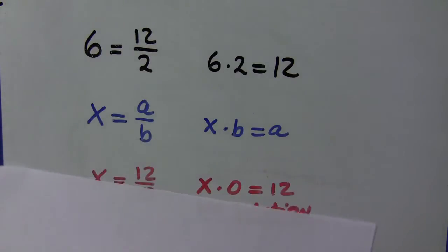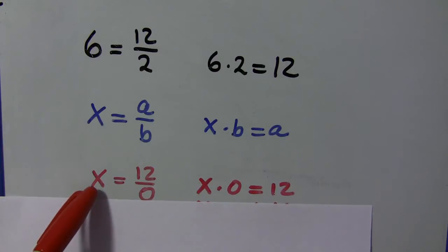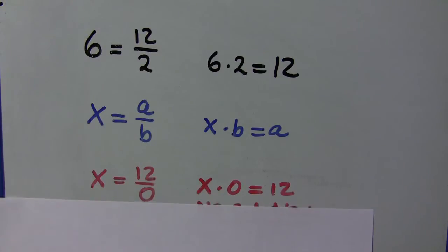Well, if this is true for all cases, then x equals 12 divided by zero, and x times zero would equal 12. Well, there are no values of x where this could be true. Therefore, there would be no solution.